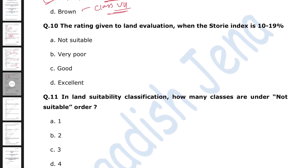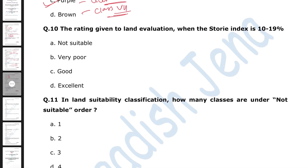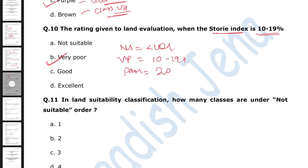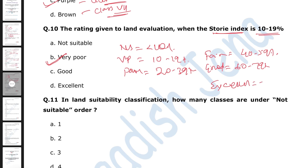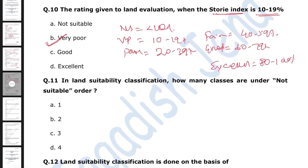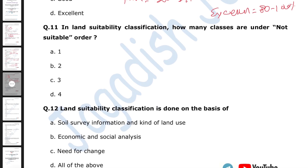The rating given to land evaluation when the Storie index is 10 to 19 percent is 'very poor.' The full Storie index rating scale is: less than 10% = not suitable; 10–19% = very poor; 20–39% = poor; 40–59% = fair; 60–79% = good; 80–100% = excellent.